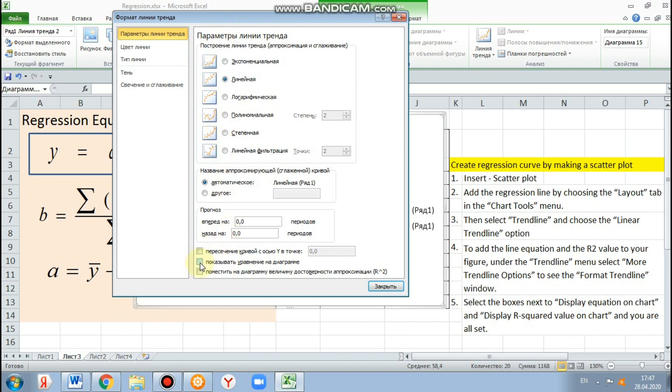And after we select the boxes next to display equation on chart and display R squared value on chart.